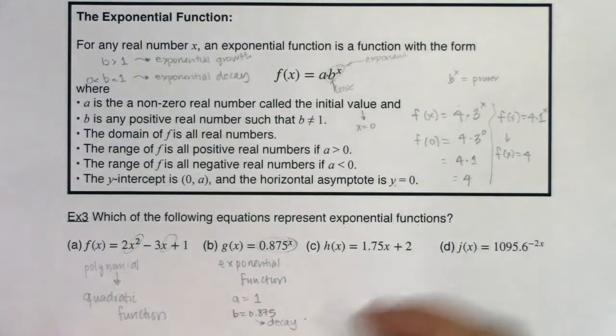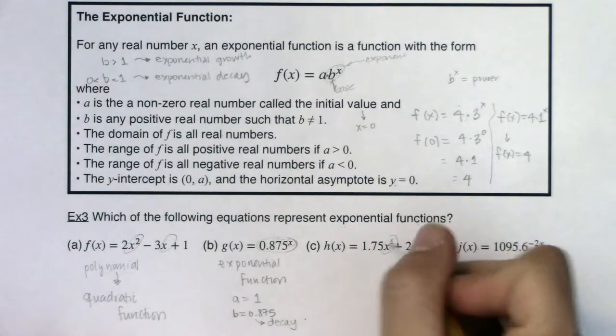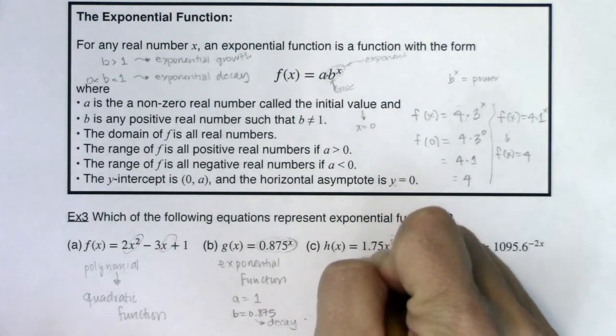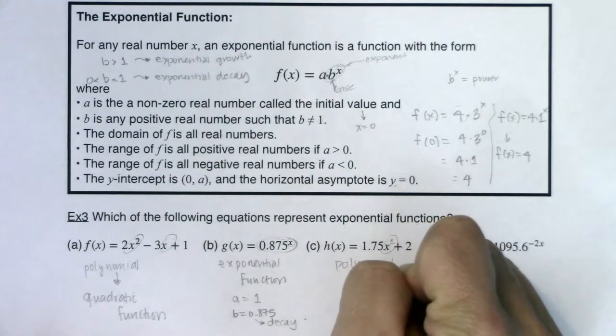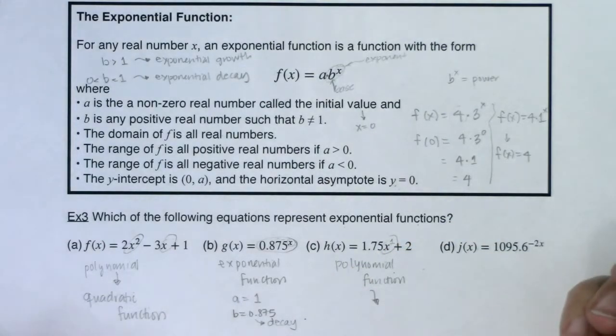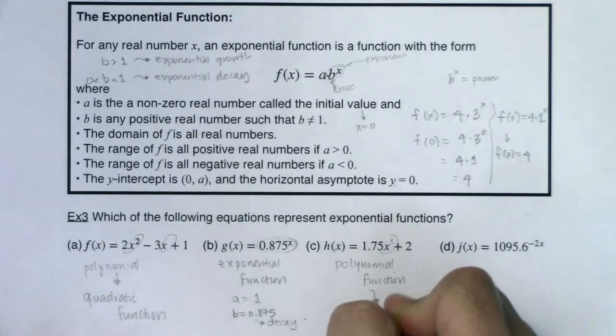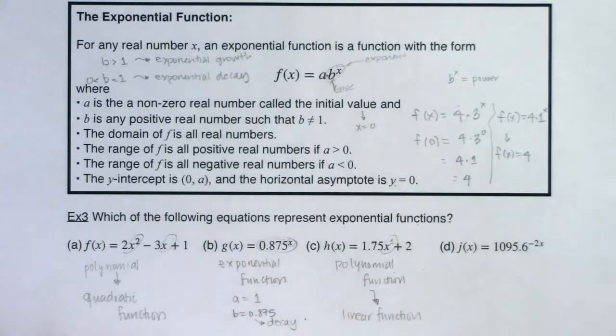Let's take a look at h. I've got a power here. This is x to the first power, but again, the variable is down in the base. So this is not an exponential function. This is another polynomial function. And if I want to get more specific, we talked about these types of functions in Chapter 4. This is a linear function. My slope is 1.75 and my y-intercept is 2.